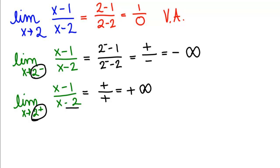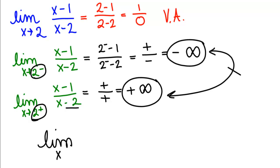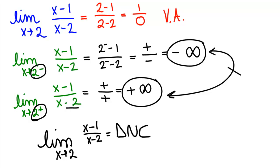In this example, we get negative infinity on one side and positive infinity on the other. Since these answers do not agree, that tells us the limit as x goes to 2 of (x minus 1) over (x minus 2) does not exist.